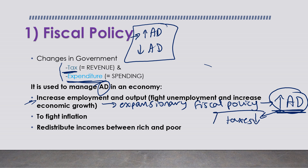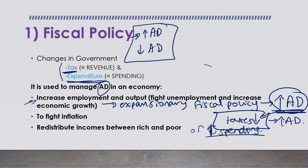They would want to decrease taxes so people can have more disposable income and therefore demand more - this is how we increase aggregate demand. Or what they can do is increase government spending: they will build more public schools and more public hospitals, creating job opportunities.